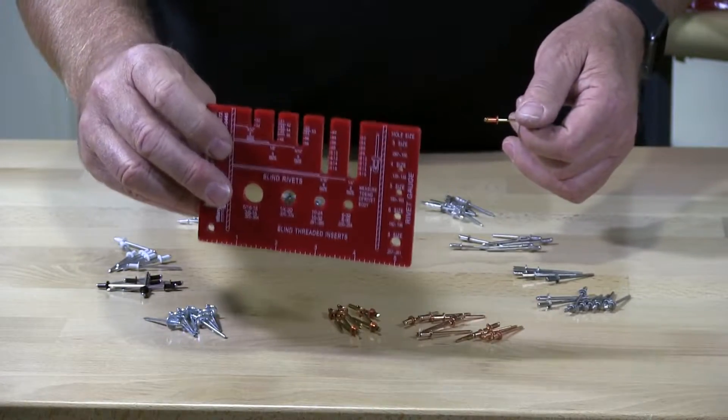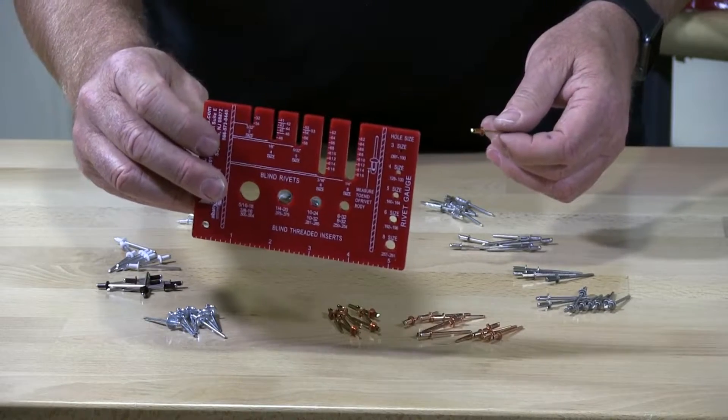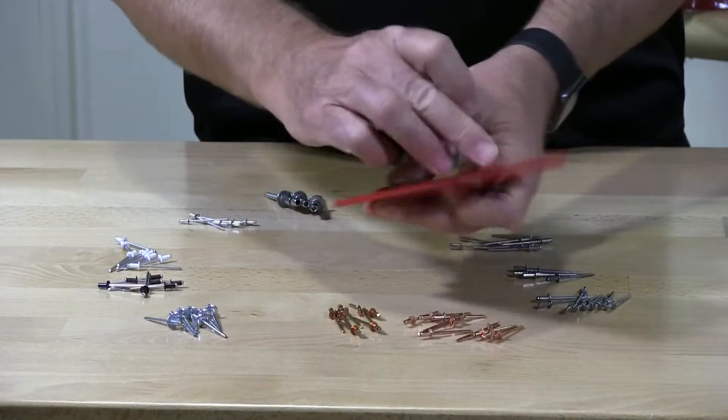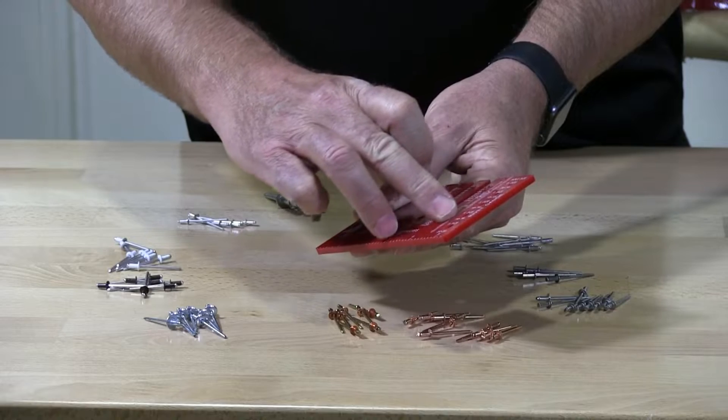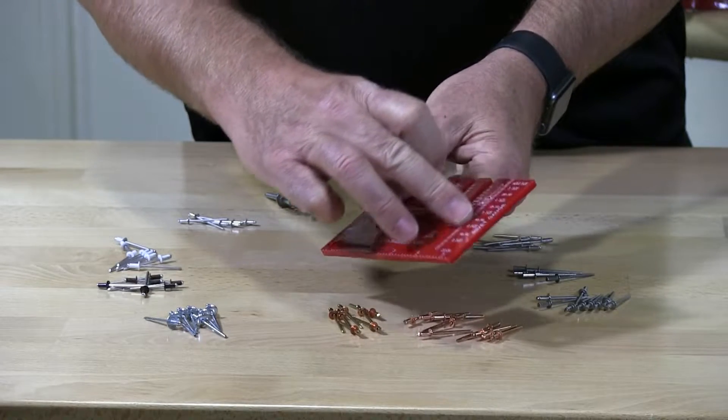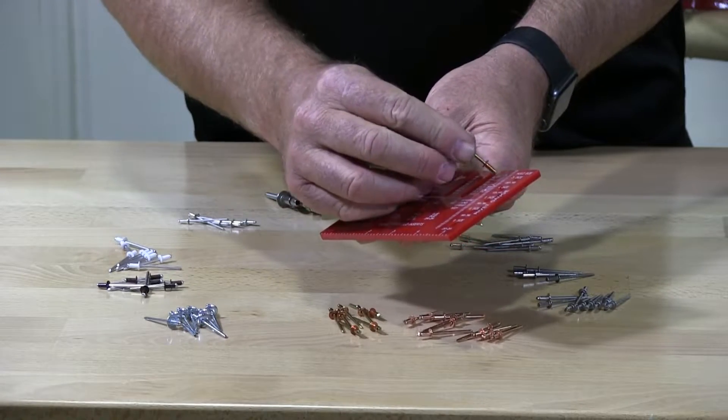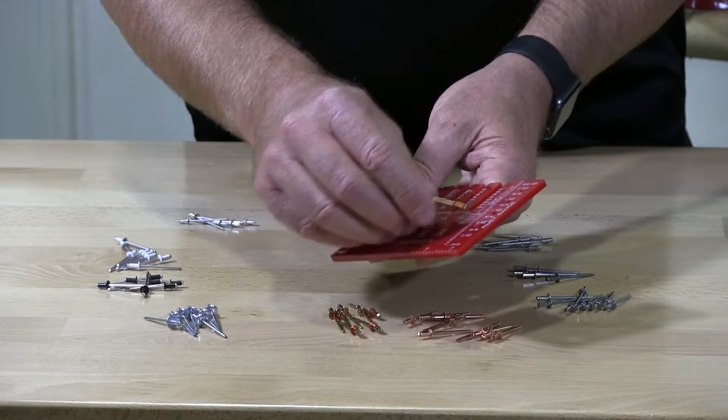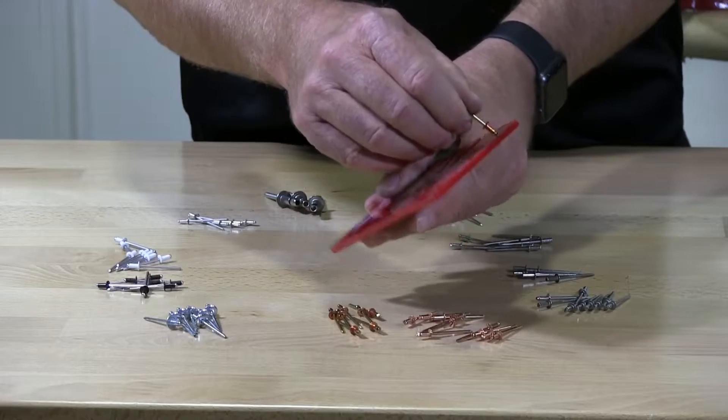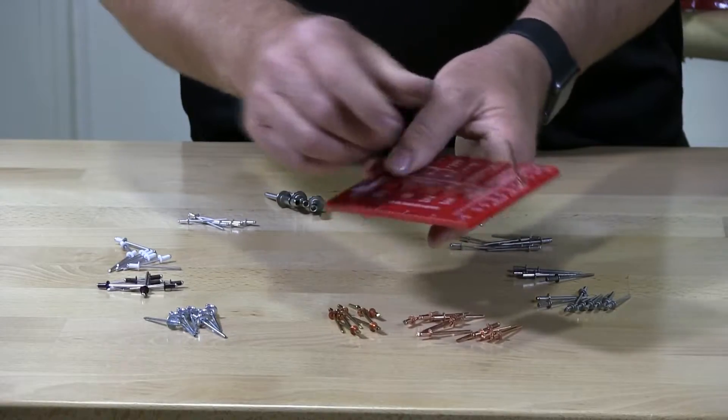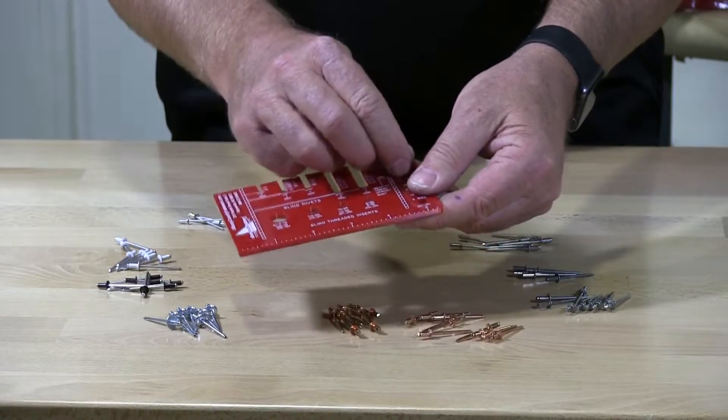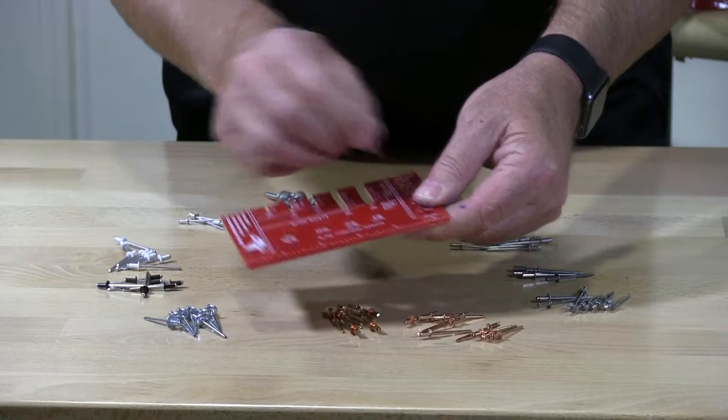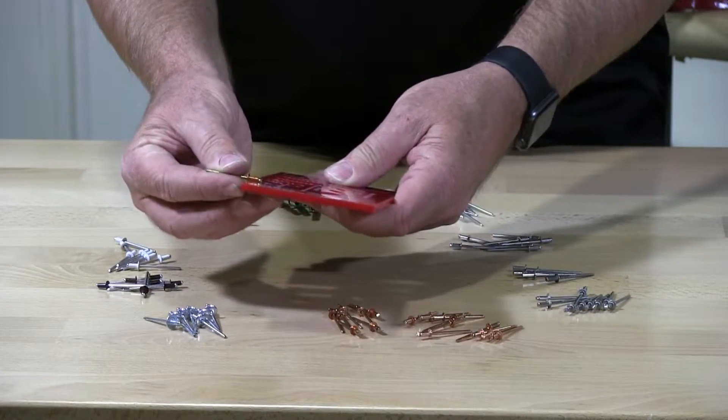This is called a rivet measuring tool. It has all the sizes on the side here which are gauge. They go from size 3 all the way up to size 8. So I'm going to try to stick it in a hole. It won't go into a 3 but it goes right into a 4. So we know its diameter is a number 4.